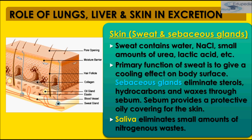Sweat glands are excretory, osmoregulatory, and thermoregulatory in function. There are about 2 million sweat glands all over the skin, and they are more in number on the palm and sole. Each sweat gland is tubular, having a basal coiled part which is embedded in the dermis, and an upper longer duct that opens on the surface of the skin through a sweat pore.